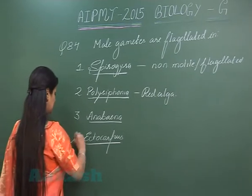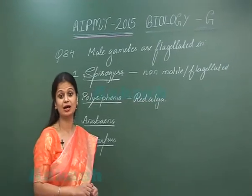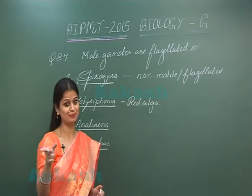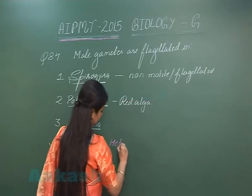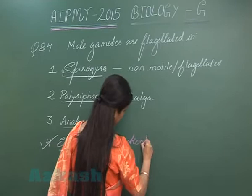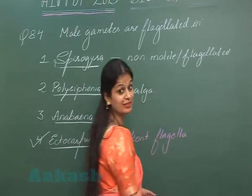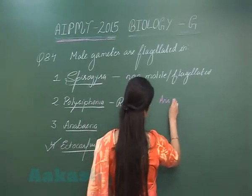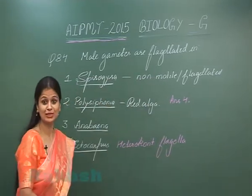Ectocarpus is the right option. The male gametes produced here are motile and flagellated. They have two different types of flagella — this is called heterocont flagellation. So the right answer is option number 4.